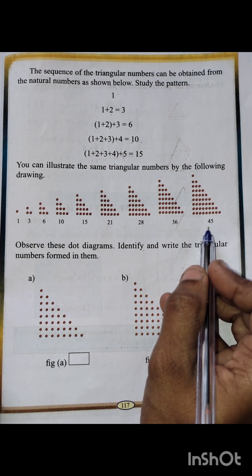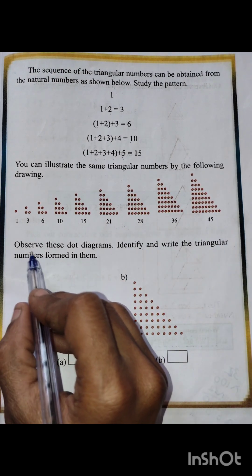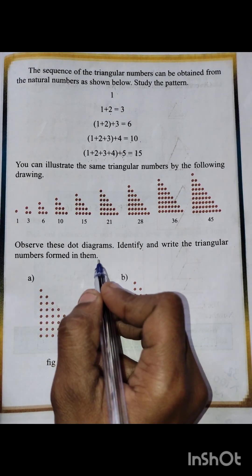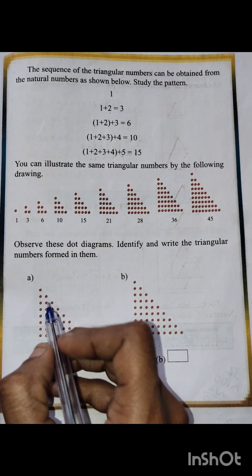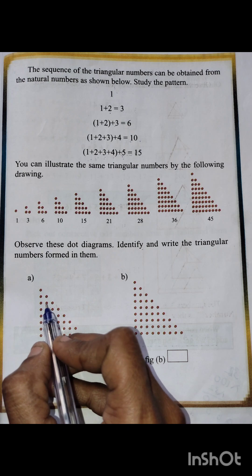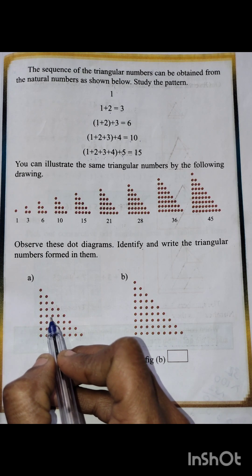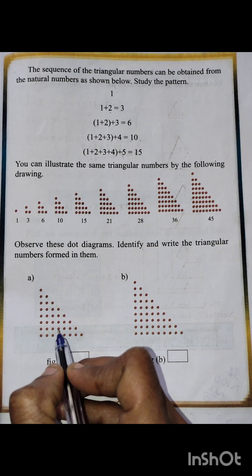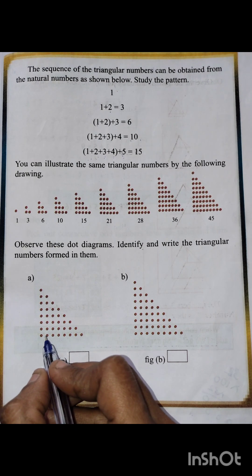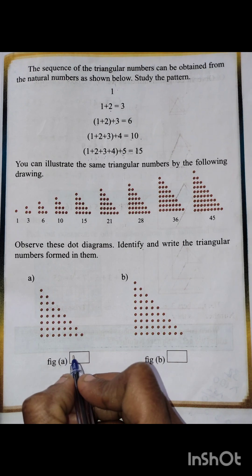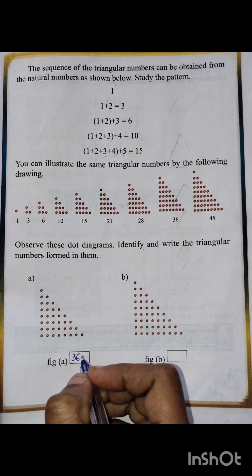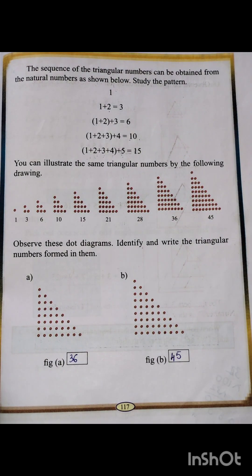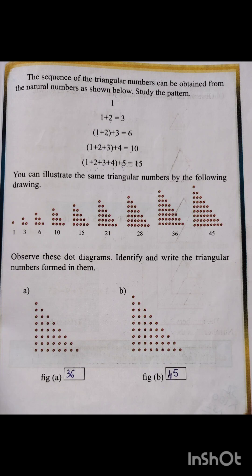Observe the dot diagrams and identify the triangular numbers formed. Counting the dots: one diagram has 36 dots and another has 45 dots. These are triangular numbers. Let's see the next topic in the next class. Thank you.